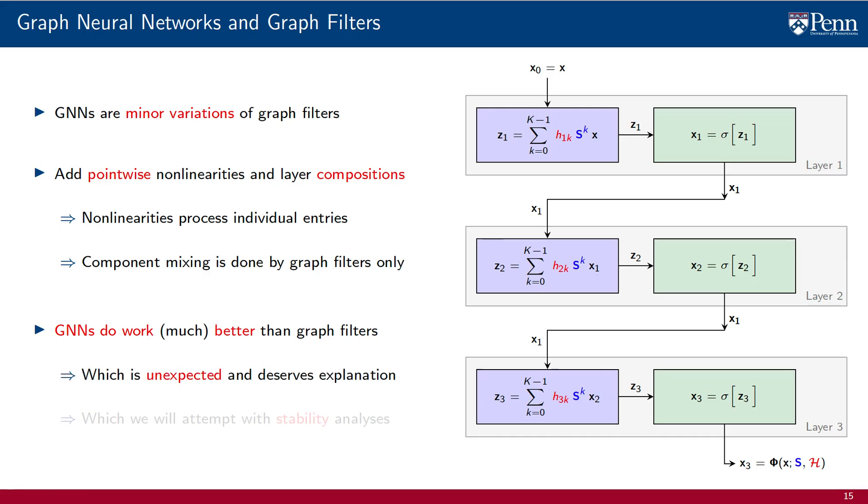This is, in the face of it, unexpected. How come such a minor modification can produce significant differences in practice? There are good reasons, related to signal invariance, as we will explore soon, to expect graph filters to work well.